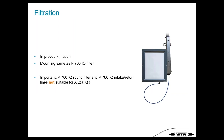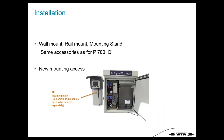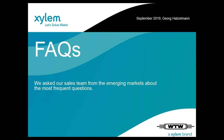We also improved the filtration — mounting is similar to the former P700 IQ, but we use a rectangular filter, which is more robust. Note for P700 IQ users: the round filter from that system is not suitable for ELISA. Installation accessories are the same as P700 — wall mounting, rail mounting, or mounting stand — plus a new mounting plate that allows direct mounting of one or two stacks of IQ components onto the ELISA housing.